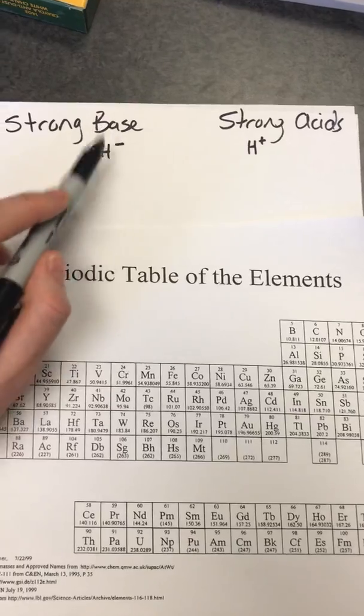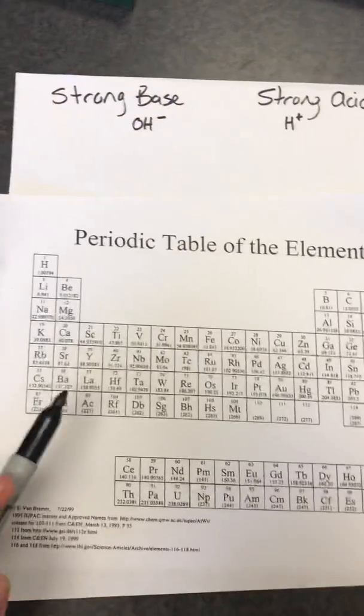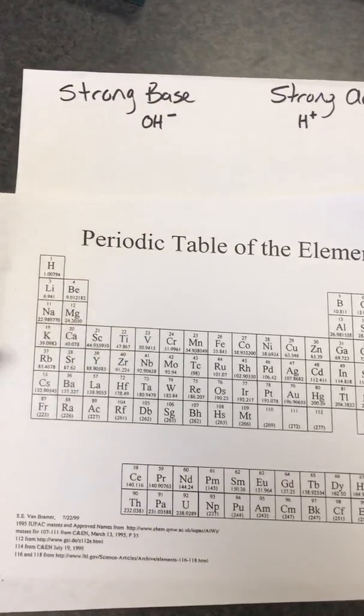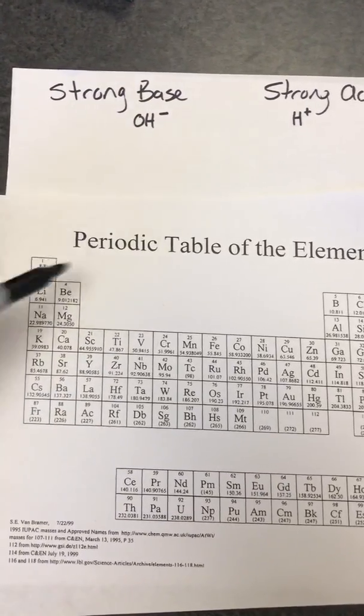Now OH-, these are negatives, we know negatives like positives, and that's convenient because metals tend to be positive. So all the bases will be found over here, on the left-hand side of the periodic table, which are the metals.